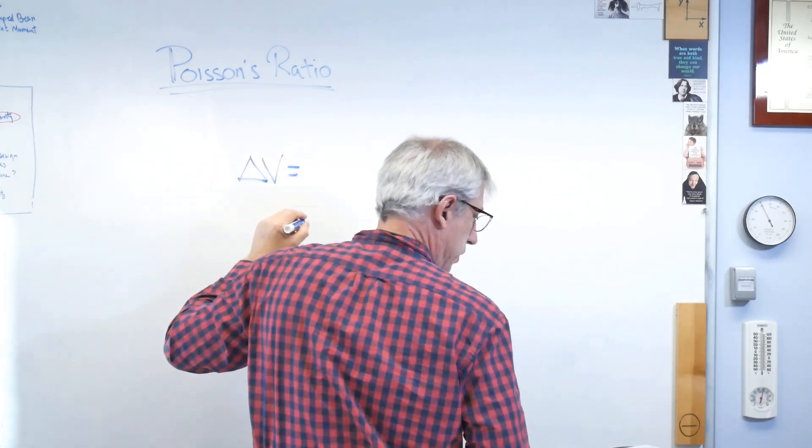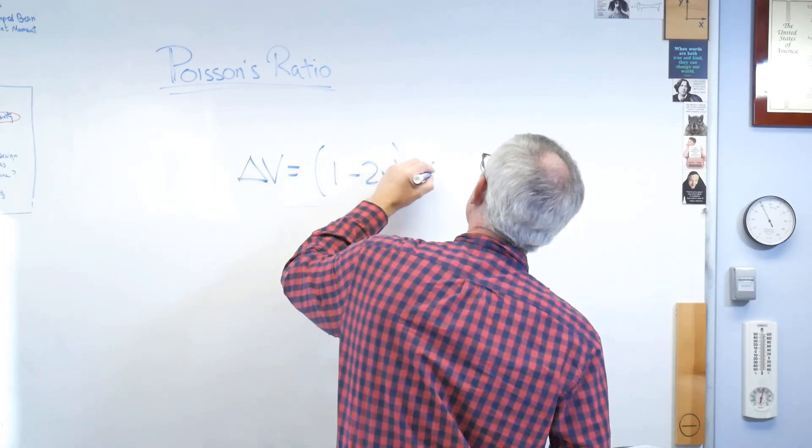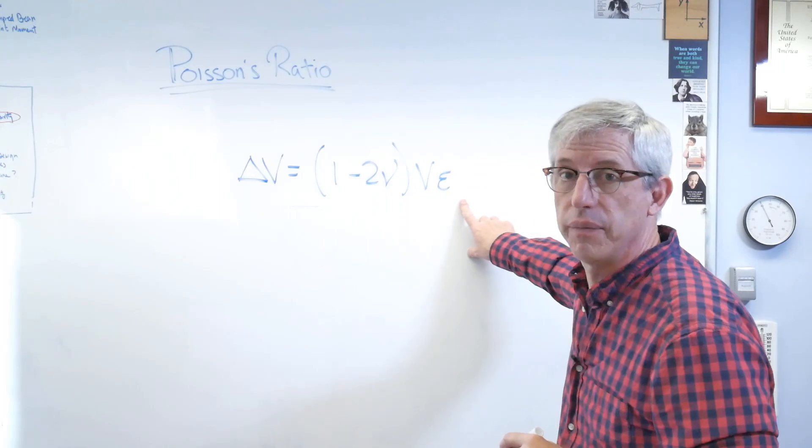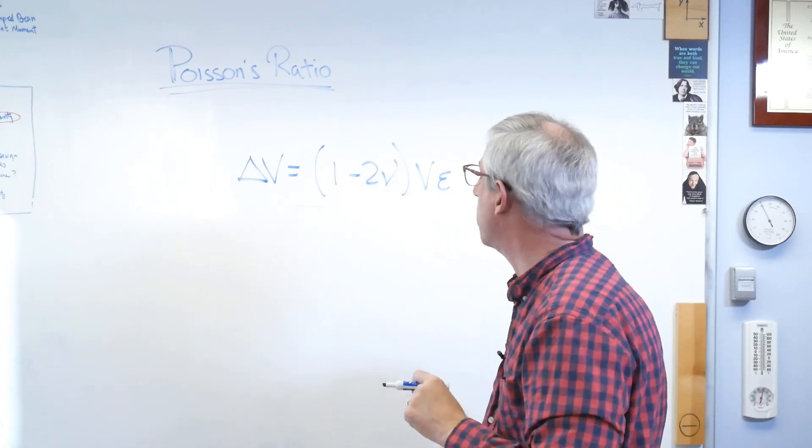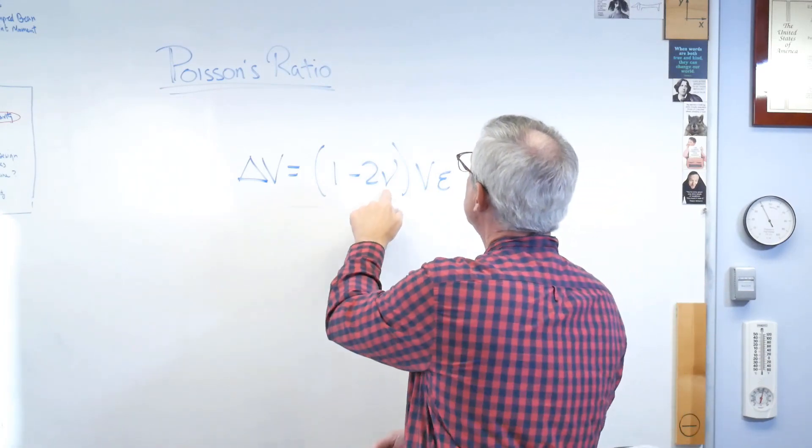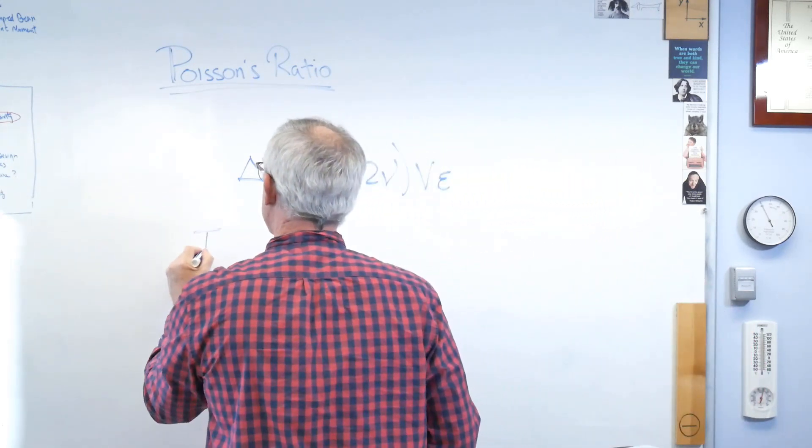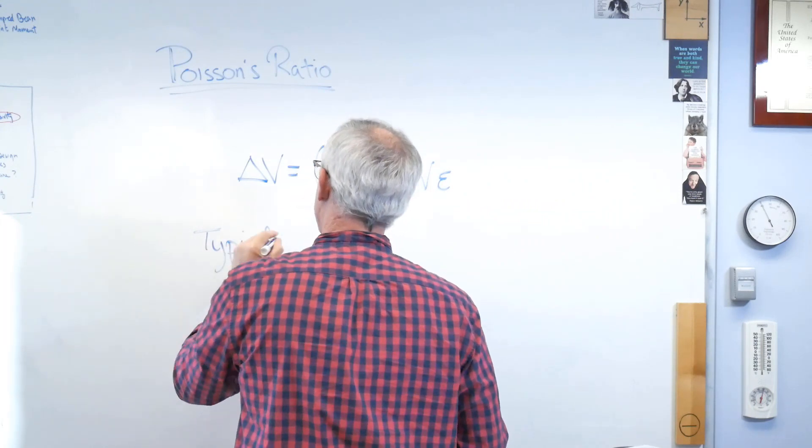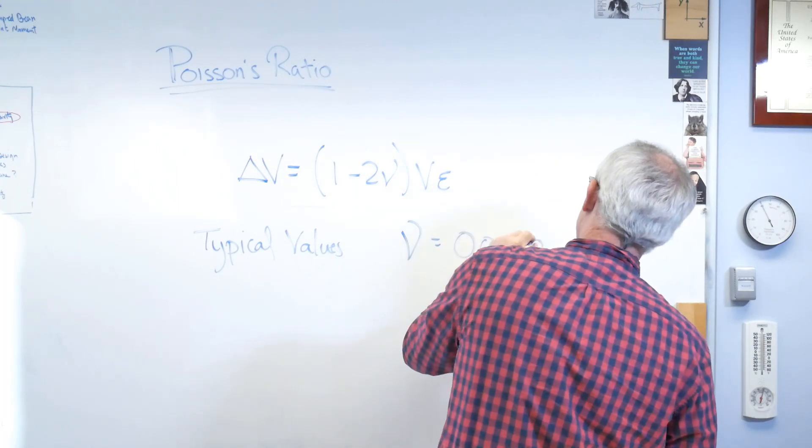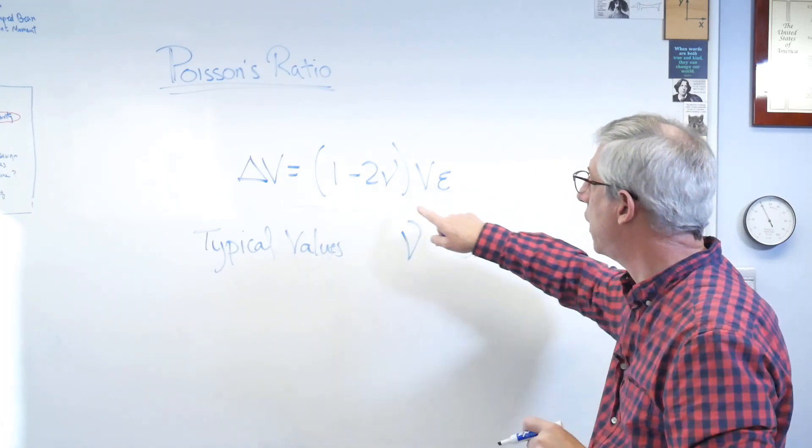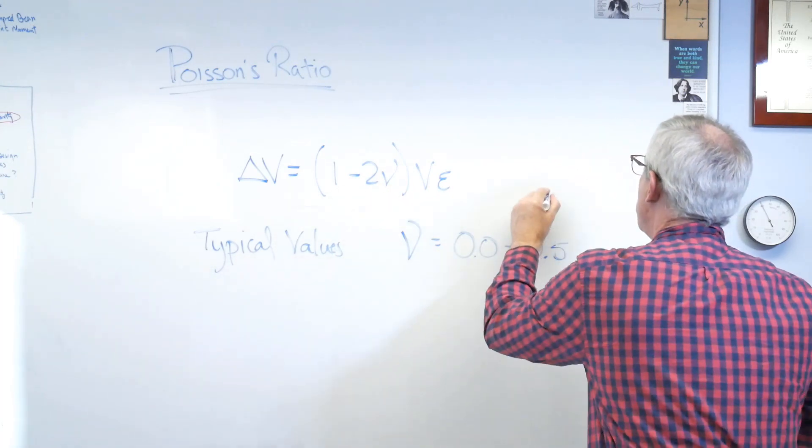There's the change in volume. Make sure I got this right here. 1 minus 2 nu times the original volume times the strain. And again, we're assuming one direction. So it's the longitudinal strain there. And this term only becomes zero if nu is 1 half. So typical values for nu, typical values for the Poisson's ratio is between 0.0 and 0.5. Well, if 0.5, let's see, 2 times 0.5 is 1, 1 minus 1 is 0. So this right here means no volume change.